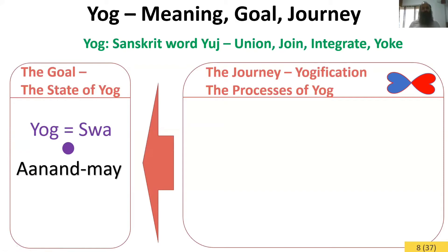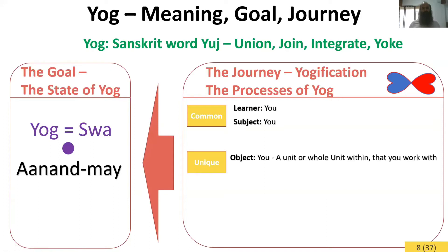When it comes to the journey these four streams take us through, there are some aspects common across all streams. First, the person who is learning is you. What is also common is that the subject is you—you are learning by experimenting and you are the person who actually experiments. This is quite a departure from the way research is typically done today, where the learner, the subject, and the object are all different. Here, what you experiment on—the object—is also you.